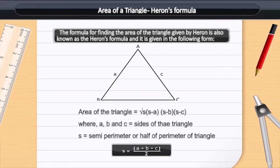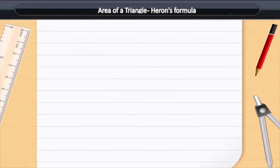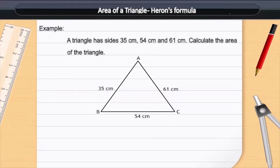Let us understand this with the help of an example. A triangle has sides 35 cm, 54 cm and 61 cm. Calculate the area of the triangle.